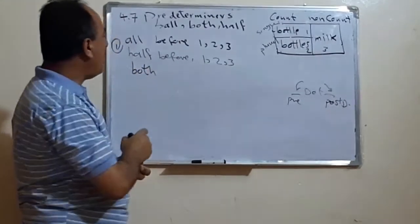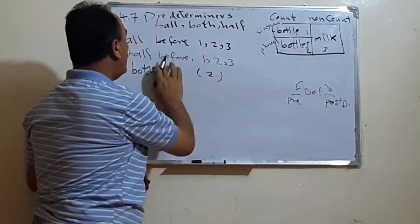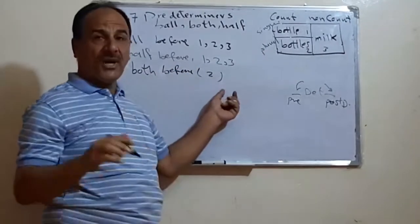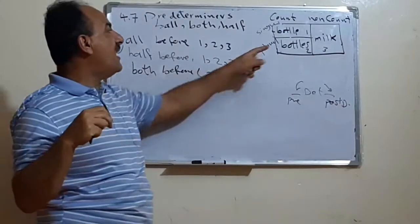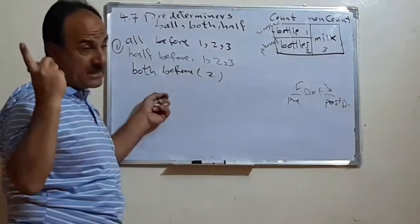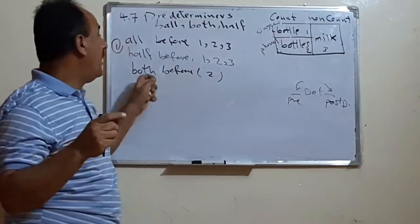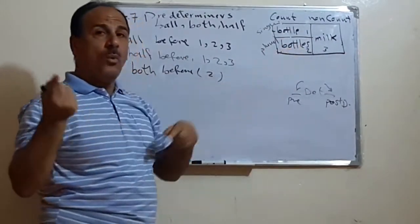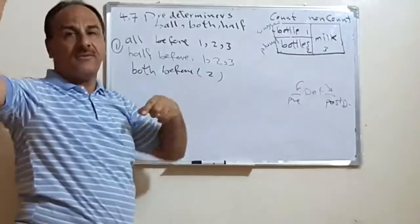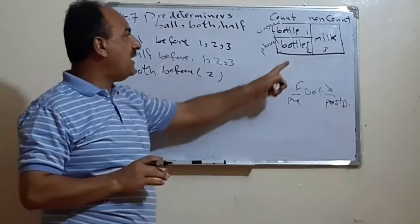Now, 'both.' Both can be used only before number two (plural), and only when it has the meaning of exactly two. For example, 'both writers' means we have two writers. We cannot say 'both writer' — that's singular. And we cannot say 'both coffee' — that's uncountable. So 'both' is used only before plural when it has the specific meaning of just two, not any other number.